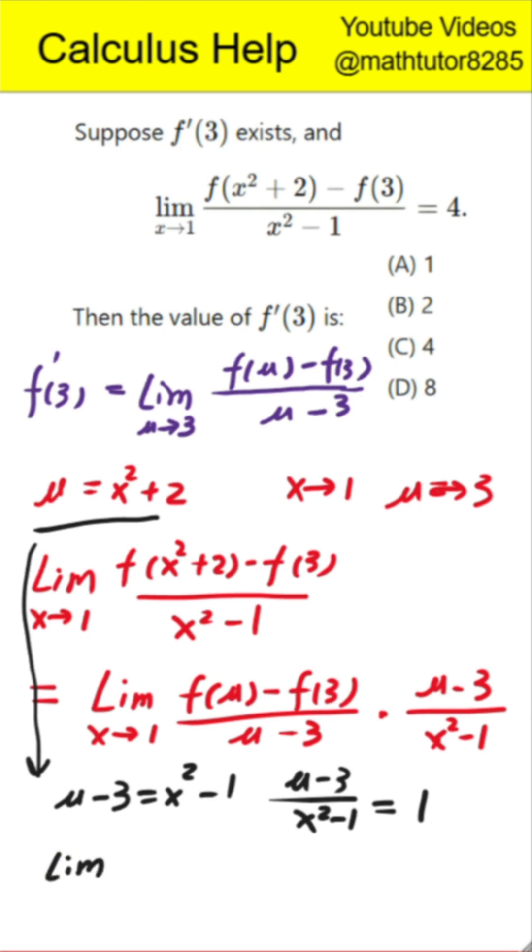So the given limit simplifies to the limit as x approaches 1 of the fraction f(u) - f(3) over u - 3 multiplied by 1, which is just the derivative of f at 3. Next step. We use the problem condition. We are told this limit equals 4. Therefore, the derivative of f at 3 equals 4.